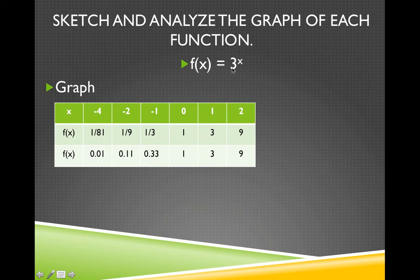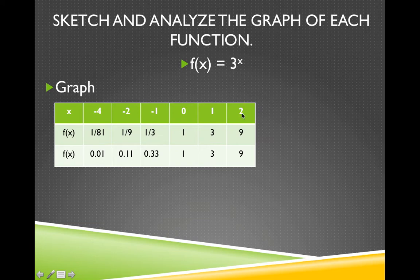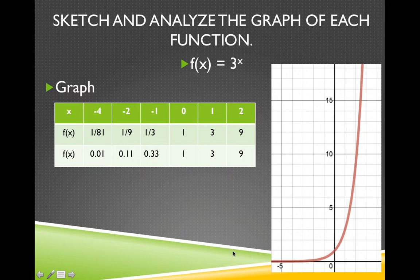Putting in negative 2: 3 to the negative 2 means the reciprocal of 3 squared, which is 1 ninth. Putting in negative 1: I get 3 to the negative 1, which is the reciprocal of 3, which is 1 third. Putting in 0: I get 3 to the 0 power. Any number to the 0 power, except for 0 itself, is always 1. Putting in 1: I get 3 to the first, which is 3. Putting in 2: I get 3 to the second, which is 9. Now I'm going to graph these points and get my exponential graph.